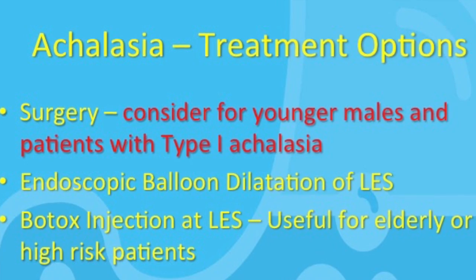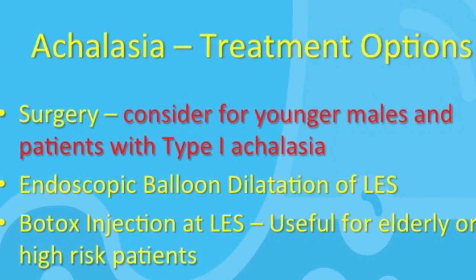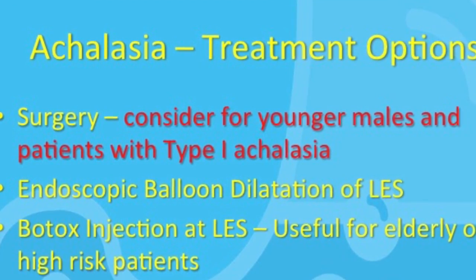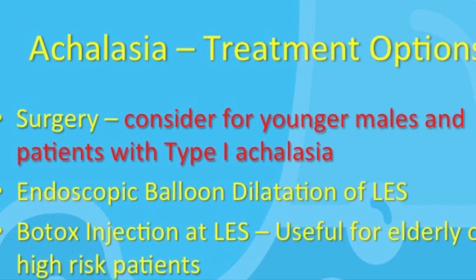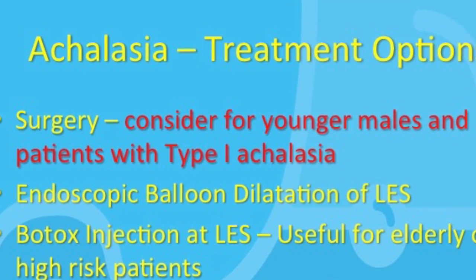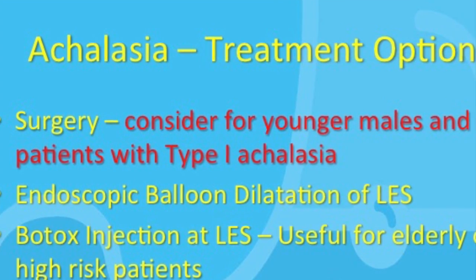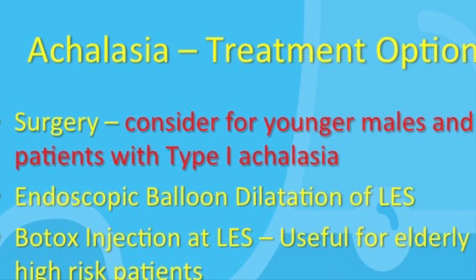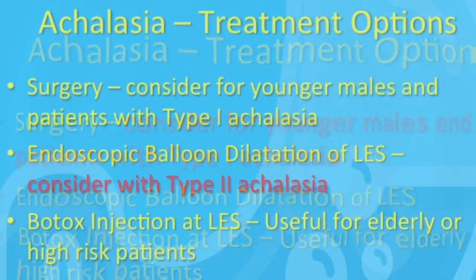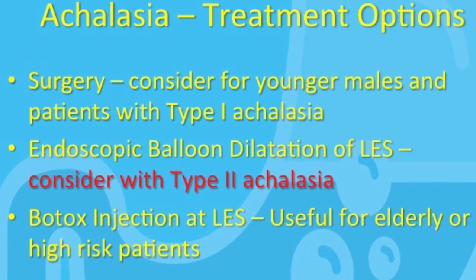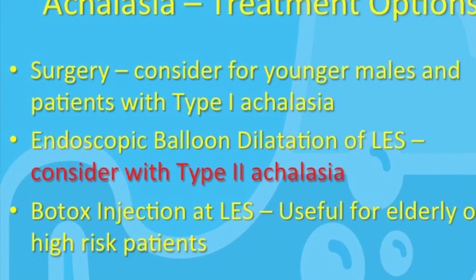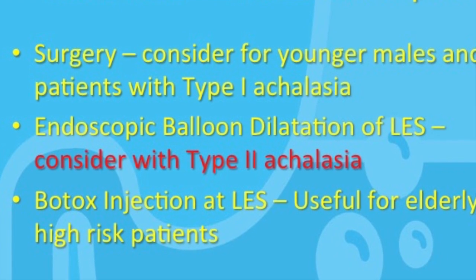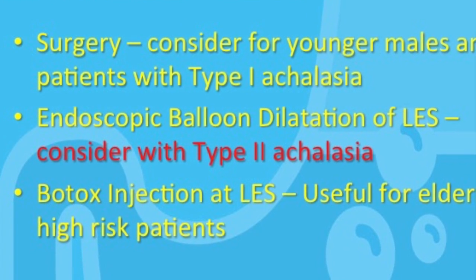Going back to the Chicago classification, there are some studies that show different responses to treatment depending on the subtypes. Type 1 achalasia tends to do better with surgery, whereas type 2 does reasonably well with both surgery and dilation. Type 3 is quite resistant to any type of treatment in general.